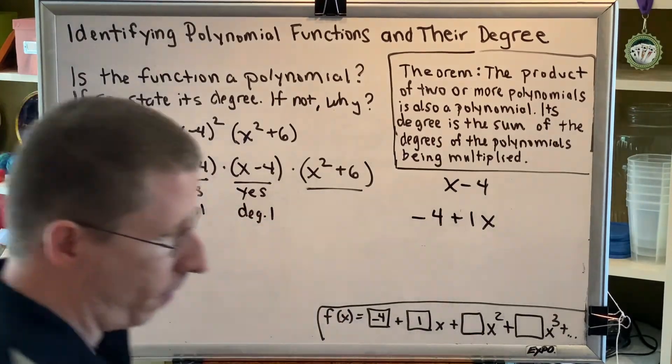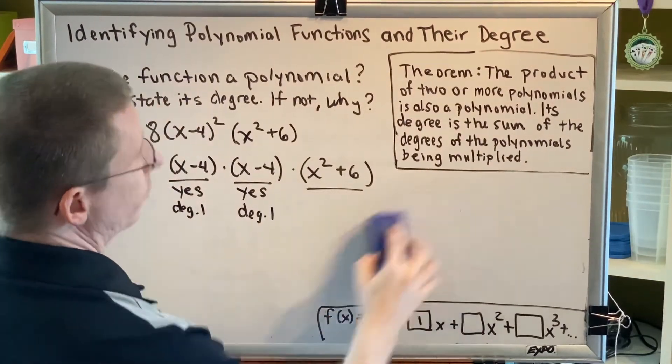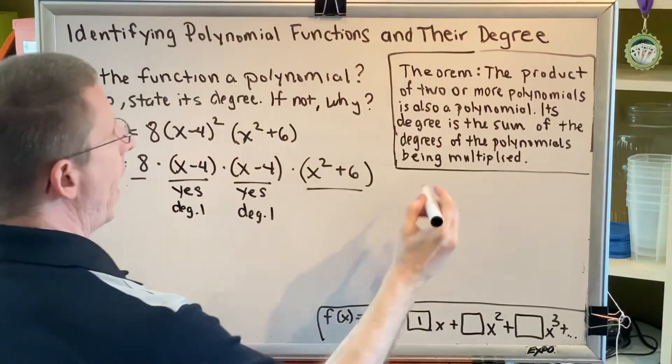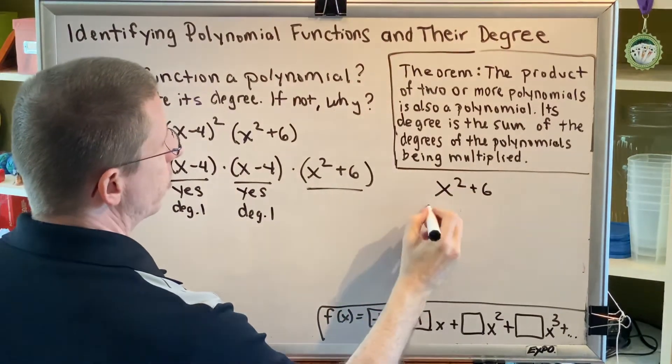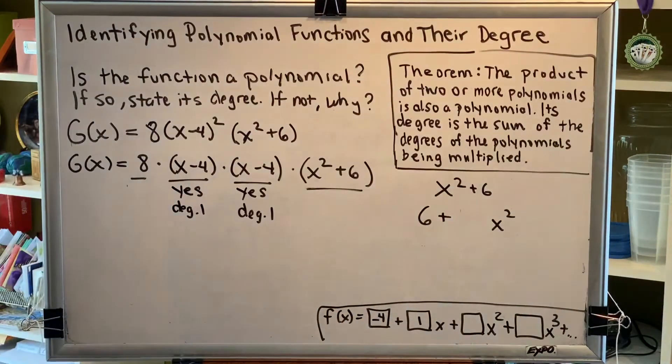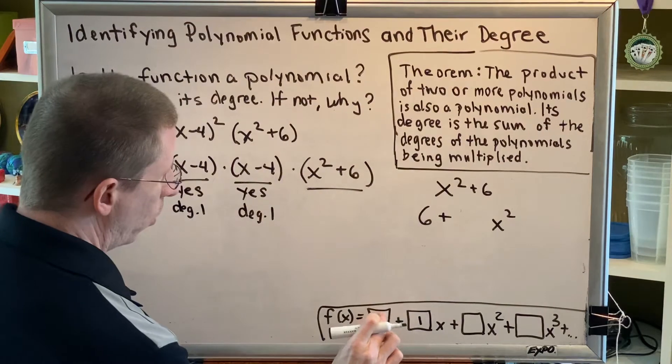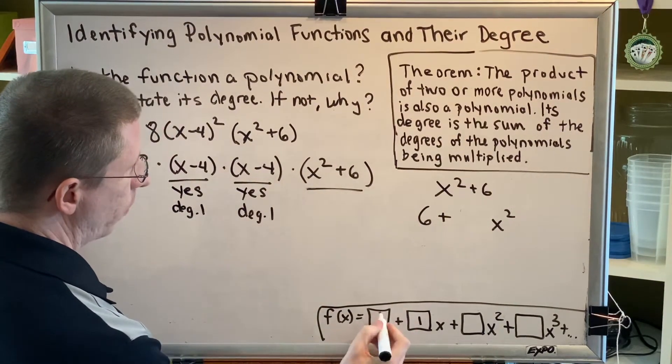Okay, let's move on to our next factor, x squared plus 6. First swap the order of the terms. So 6 plus x squared. Let's see if we can put this in polynomial form. What term has no variable? 6. That goes in the first box.